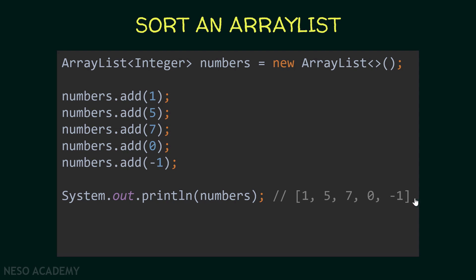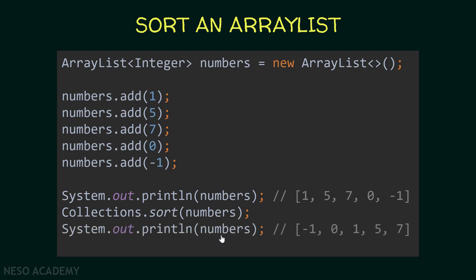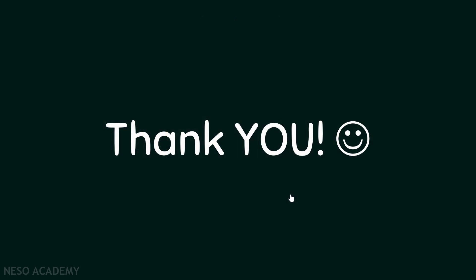Now let's print the numbers ArrayList — as you can see these numbers are not sorted. We then use the Collections class and call the sort method, passing our numbers ArrayList as an argument. After this statement executes, the ArrayList is sorted, and as you can see the elements are now in increasing order. The sort method of the Collections class sorts ArrayLists alphabetically or numerically depending on the type. Thanks for watching and I'll see you in the next video.